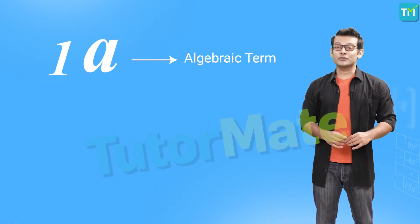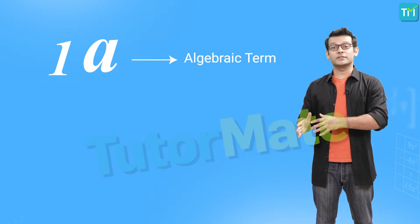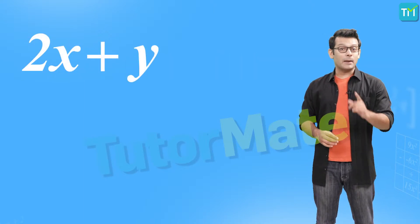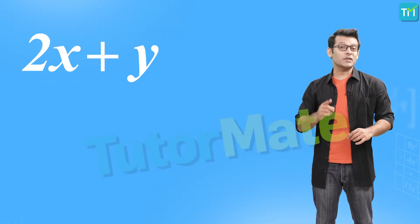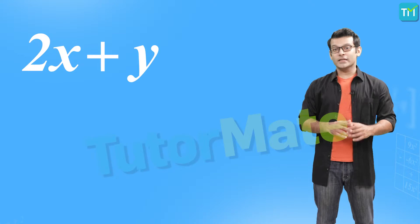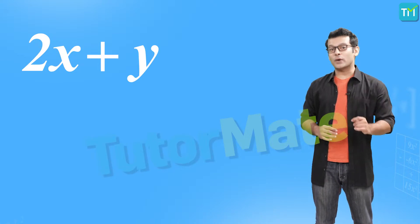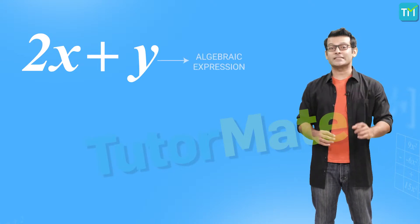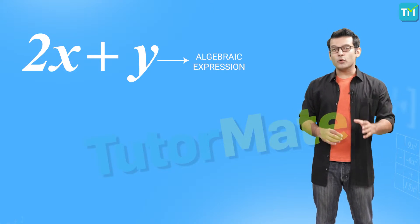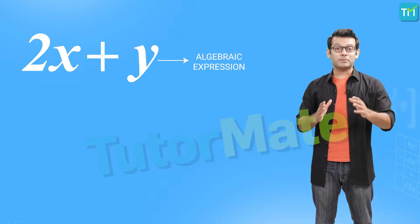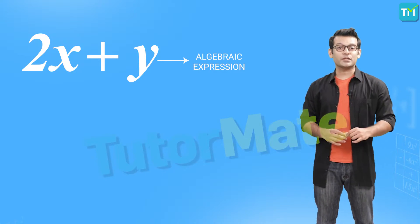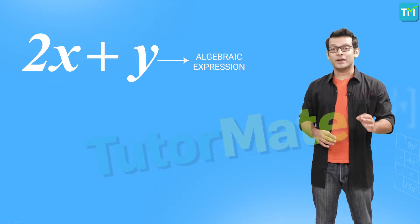Now we can also write two or more algebraic terms together. For example, 2x and y are both algebraic terms, and if we write them together separated by an addition operator we get 2x plus y — and this is known as an algebraic expression. So whenever two or more algebraic terms are separated by plus and minus signs, the resulting expression is known as an algebraic expression.